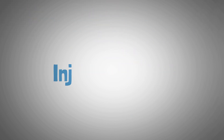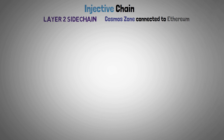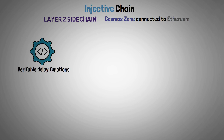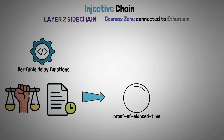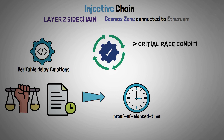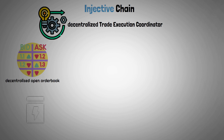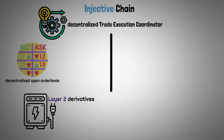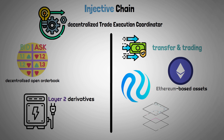The project is composed of three different parts. The first component is the Injective Chain, a Layer 2 sidechain and Cosmos Zone connected to Ethereum. It makes use of verifiable delay functions to enforce an equitable transaction ordering consensus that, through proof of elapsed time, reflects actual time. This resolves Ethereum's critical race conditions and miner extractable value problems. Currently, Injective Chain operates as a decentralized trade execution coordinator, hosts a decentralized open order book, and powers the Layer 2 derivatives platform. The chain allows for the transfer and trading of Ethereum-based assets and is constructed on top of Tendermint.